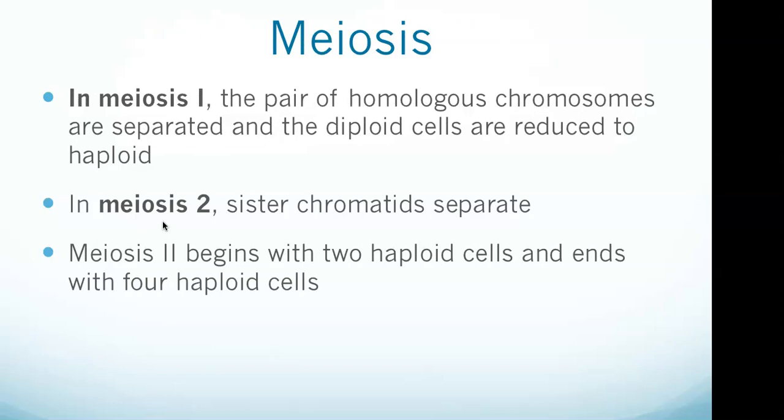In meiosis one, the pair of homologous chromosomes are separated and diploid cells are reduced to haploid. It is divided into several stages: prophase, metaphase, anaphase, and telophase. In meiosis two, sister chromatids separate. Chromosomal replication does not occur between meiosis one and meiosis two — meiosis one proceeds directly to meiosis two without going through interphase. Meiosis two resembles mitosis more than meiosis one. Chromosomal numbers, already reduced to haploid by the end of meiosis one, remain unchanged after this division. Meiosis two begins with two haploid cells and ends with four haploid cells.